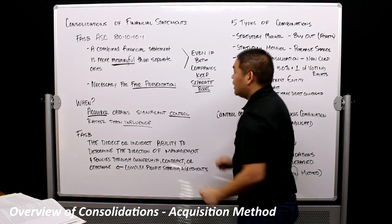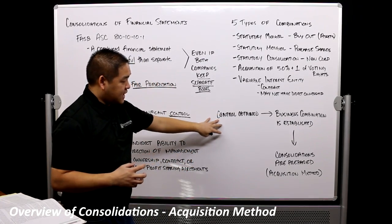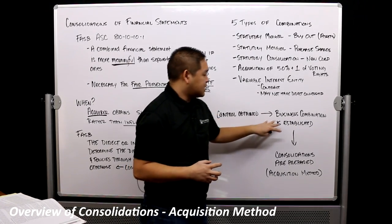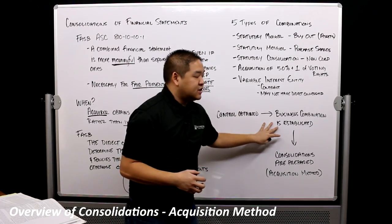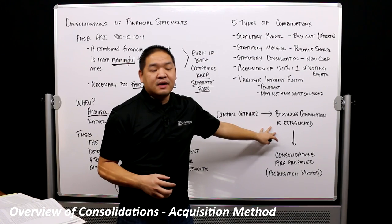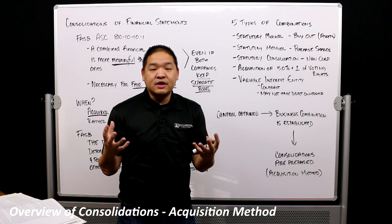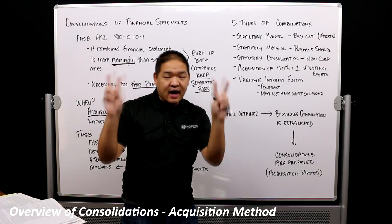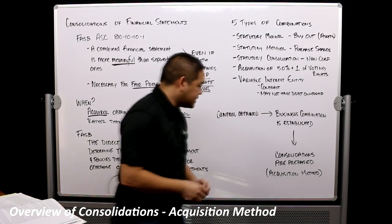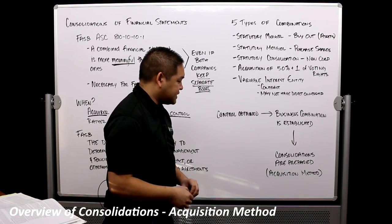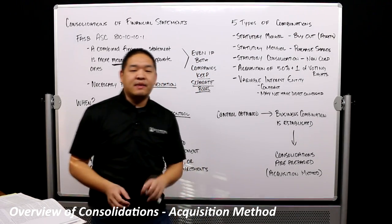When control is obtained, a business combination exists. Business combination doesn't mean we're combining all assets and liabilities together — it just means: do I have control? Yes, then we technically have a business combination. When a business combination is established, we prepare consolidated financial statements at the end of each year based on the acquisition method, which we'll cover in other lessons.